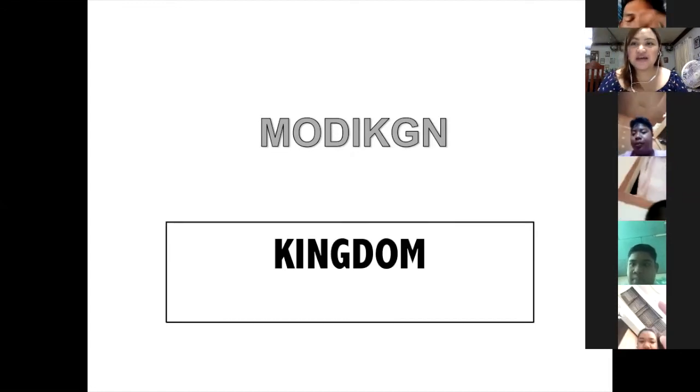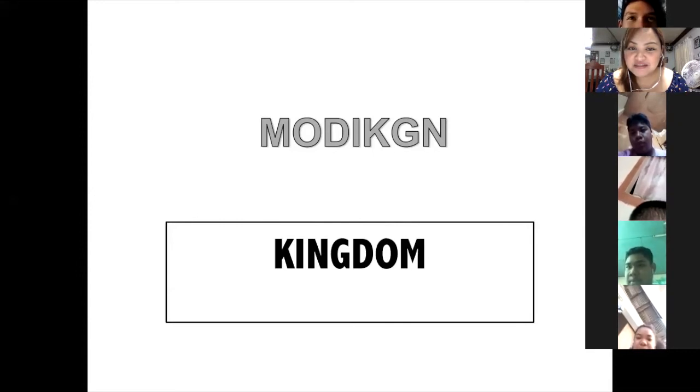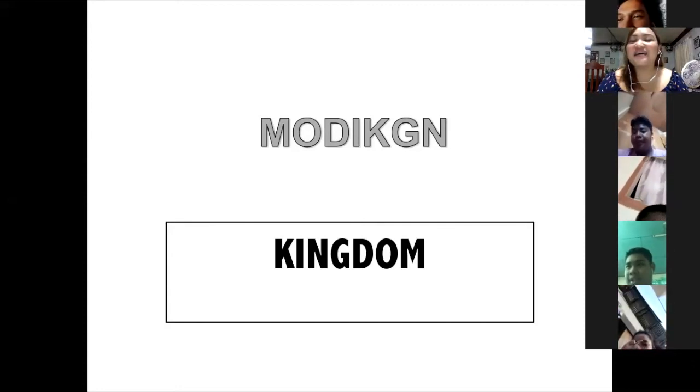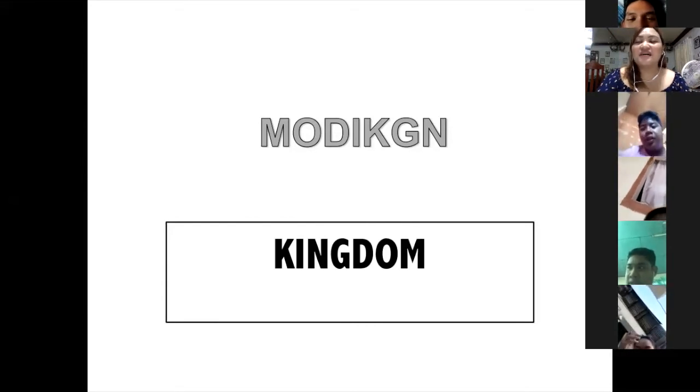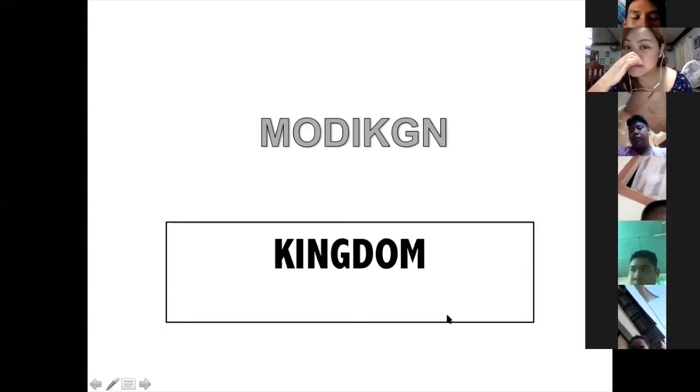Number four — the answer is kingdom. So remember the mnemonic: King Philip came over fearing green snakes — Kingdom, Phylum, Class, Order, Family, Genus, Species. Don't forget that kingdom is the highest form of taxonomy — the branch of science that deals with naming and classifying organisms.